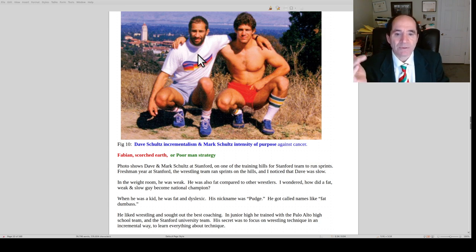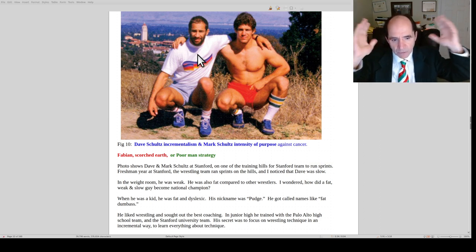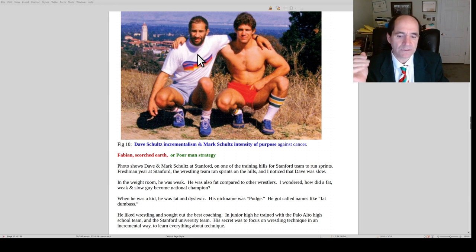It turned out when he was young, he was a fat kid with dyslexia. And the other kids would make fun of him and pick on him. His name was Pudge. And he got called things like fat dumbass because he couldn't read too well. He liked wrestling a lot and he really had a knack for learning technique. He would travel around in junior high, go to the high school, learn the technique from the high school guys. He'd ride his bike over to the college. He was only a couple blocks away. And he learned from the college guys.